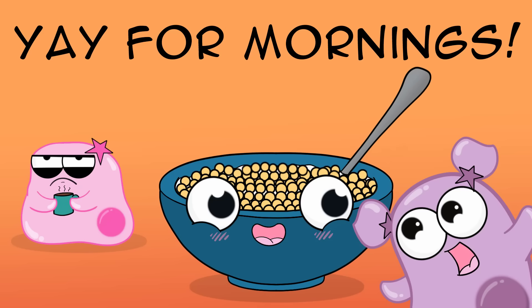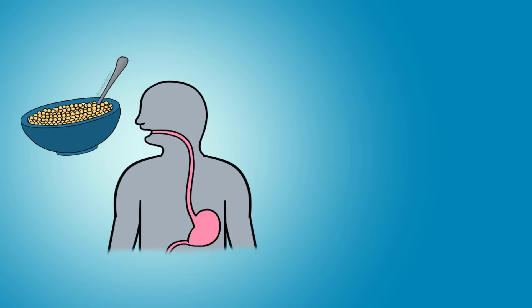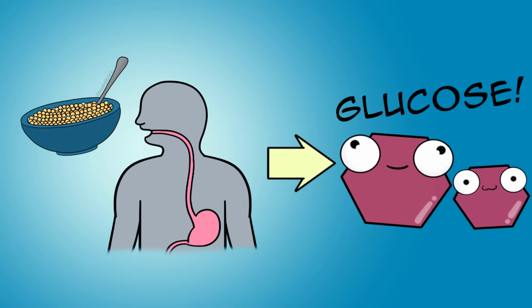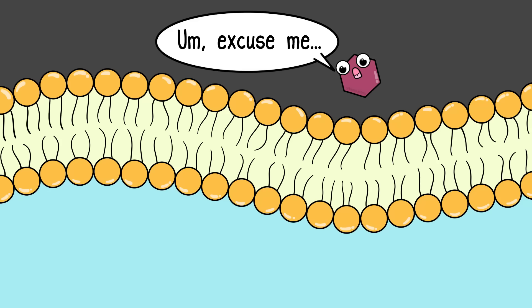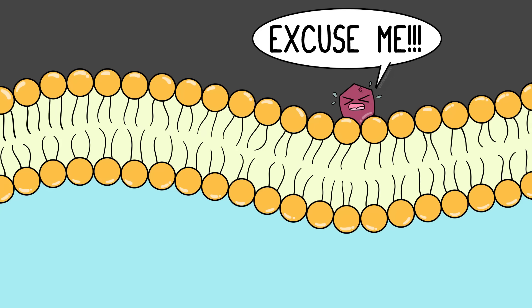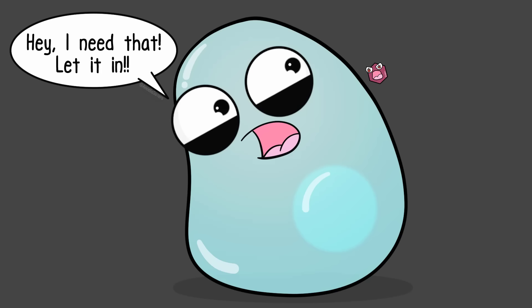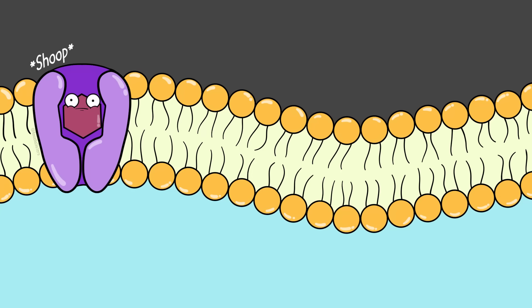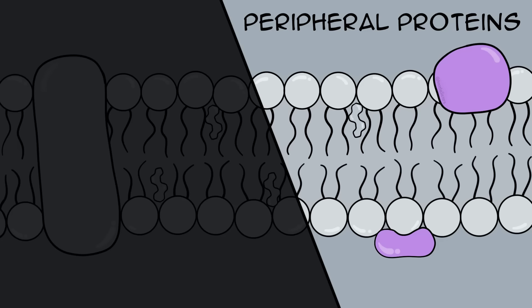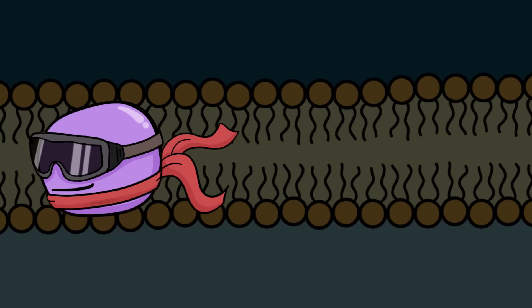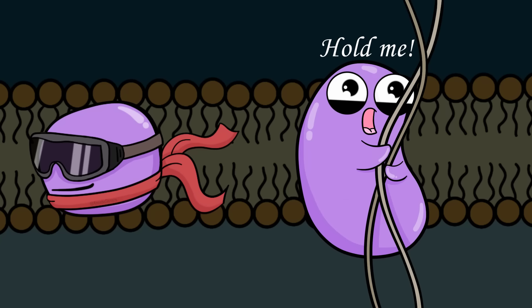Consider the breakfast you ate this morning. Your body digested what you ate to obtain glucose. Once in the bloodstream, those glucose molecules can't just squeeze through the phospholipid bilayer to enter your cells — they're too big and polar. But your cells need glucose to survive, to make ATP, and they rely on integral proteins to get it. Peripheral proteins tend to be more loosely attached and have an assortment of functions, such as acting as enzymes or attaching to the cytoskeleton to help with cell shape.